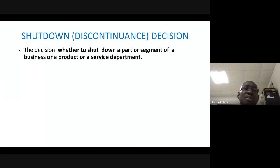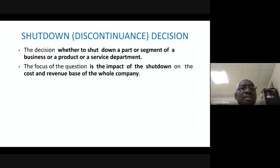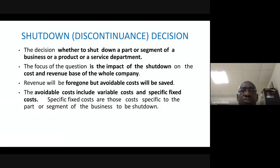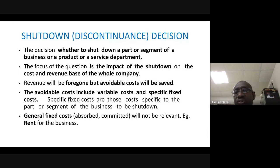A shutdown could apply to an operation, a segment, a subsidiary, a product, or a service department. The focus is the impact of the shutdown on the cost and revenue base of the company. If you shut down, you will certainly forgo revenue attributable to that product or segment, but avoidable costs — including variable costs and specific fixed costs — will be saved.